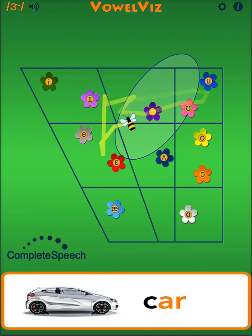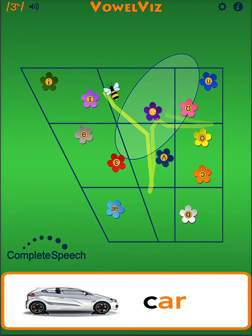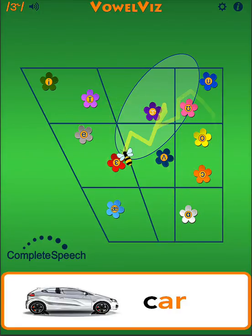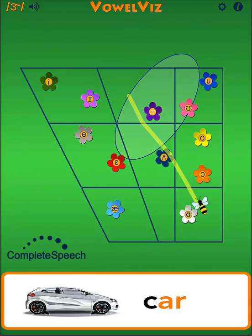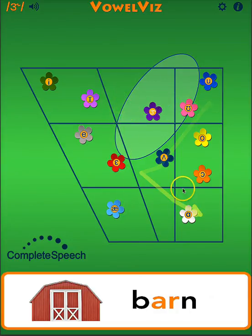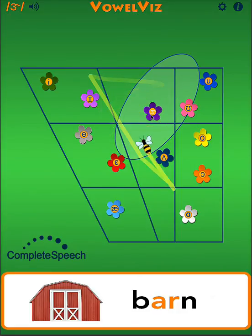Now when you're working to generalize the R sound to different word environments, we should look for a clear transition from the target vowel to the R. Let's look at the first vocalic R: R. Car, barn. We can see that there's a clear transition from the low back AH, and the tracking B goes right into the R target.